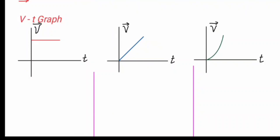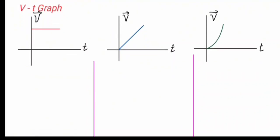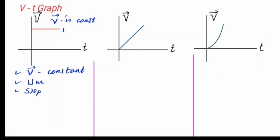The velocity versus time graph with a horizontal line means the velocity is constant. This represents uniform motion. The slope of the v-t graph — vertical increase over horizontal increase — is the change in velocity over change in time, which gives the average acceleration. So the slope of the velocity versus time graph represents acceleration.